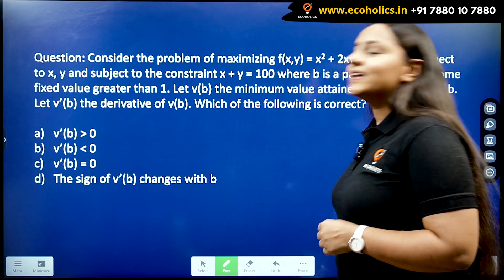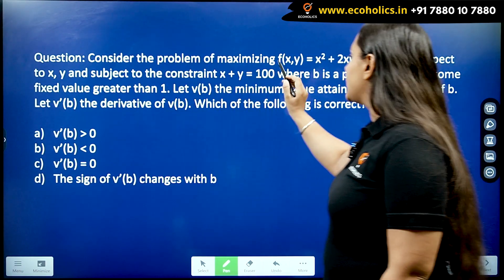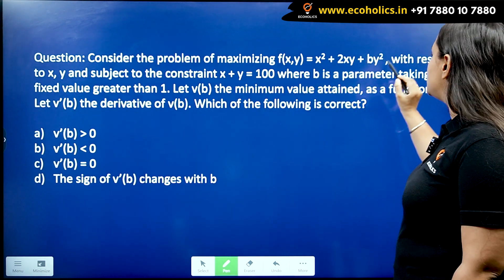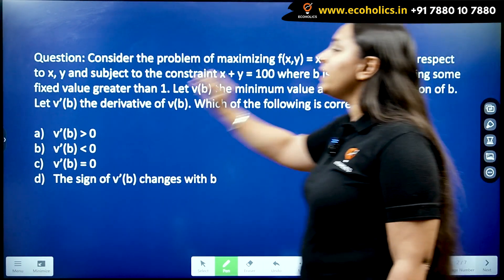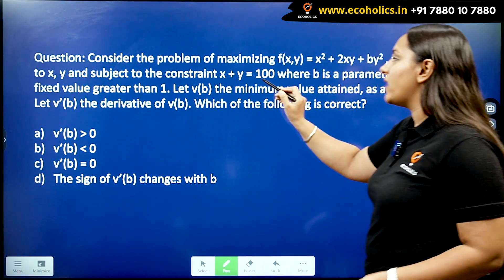Let's get to the question. The question reads: Consider the problem of maximizing function f(x,y) = x² + 2xy + by² with respect to x, y and subject to the constraint x + y = 100, where b is a parameter taking some fixed value greater than 1.